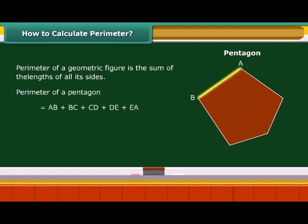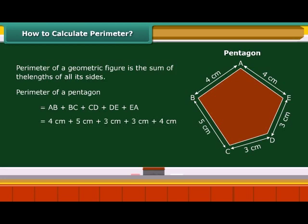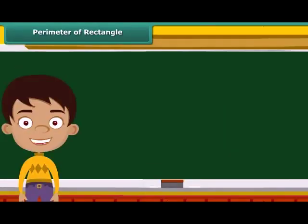Suppose the lengths of the five sides AB, BC, CD, DE, and EA are given. The perimeter of the pentagon is 4 cm plus 5 cm plus 3 cm plus 3 cm plus 4 cm, which is equal to 19 cm.